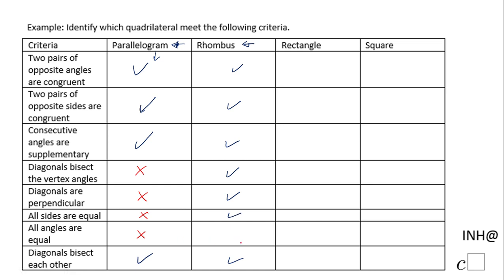All sides are equal — yes, that works for a rhombus. The only one that doesn't work for a rhombus is: all angles are equal — no, that doesn't work.